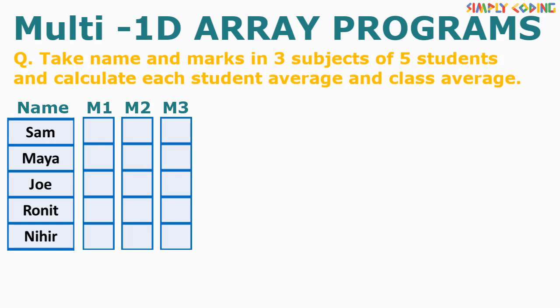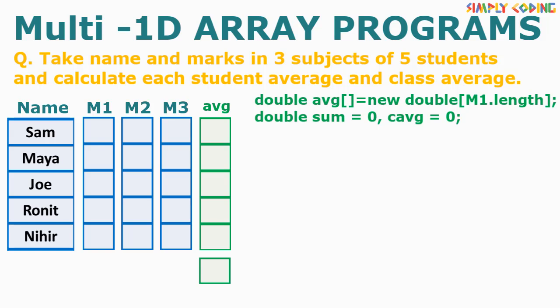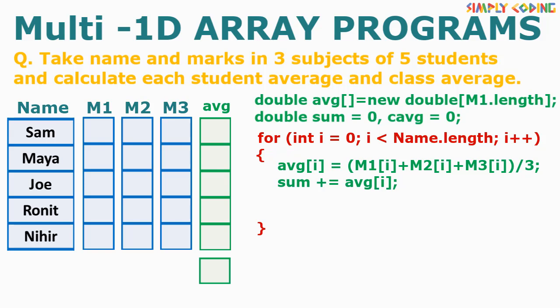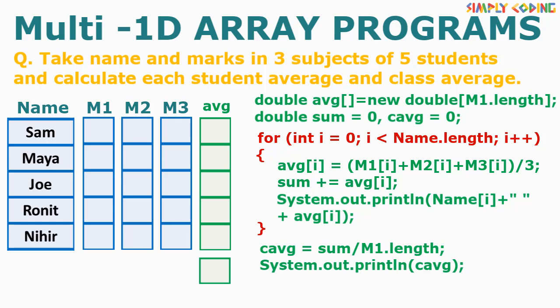The next program has names and marks in three subjects for five students, and we need to find the average mark of each student and the class average. We take four arrays as input, declare another array for student averages, and two double variables for sum and class average. Inside the standard traversal loop, we add the three marks and divide by three to get each student's average. We also accumulate the sum using sum += average. After the loop, we calculate the class average by dividing sum by the number of students and print it.